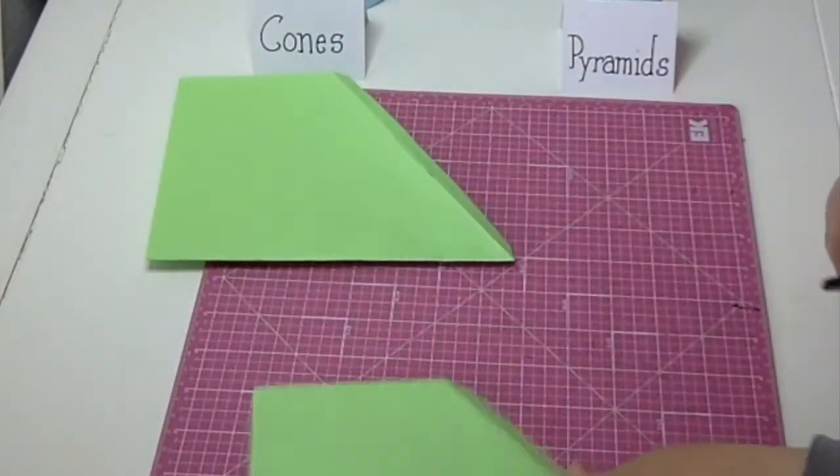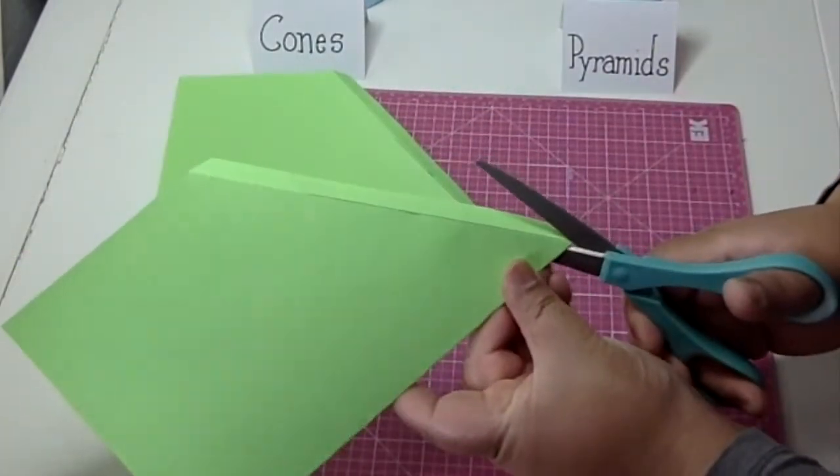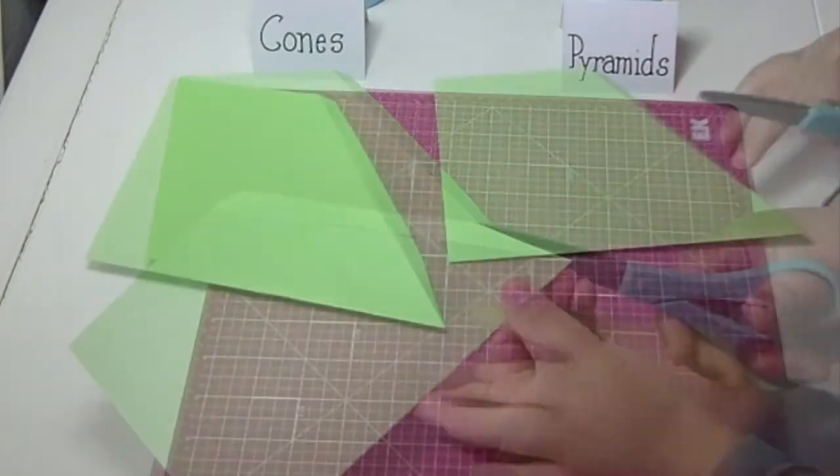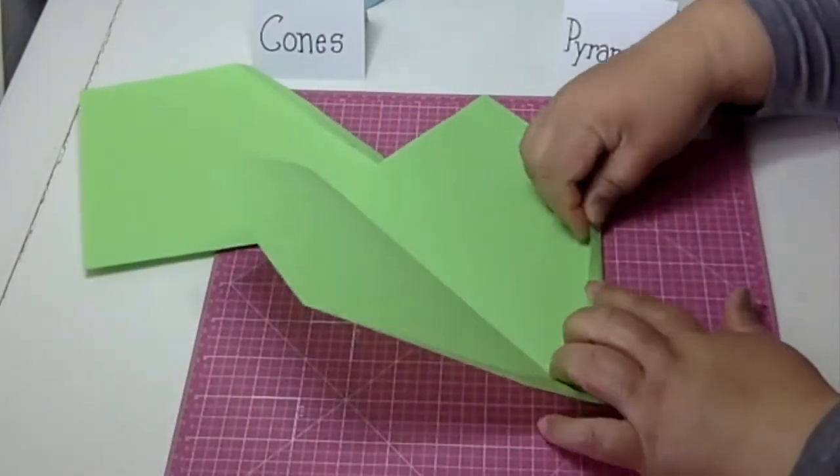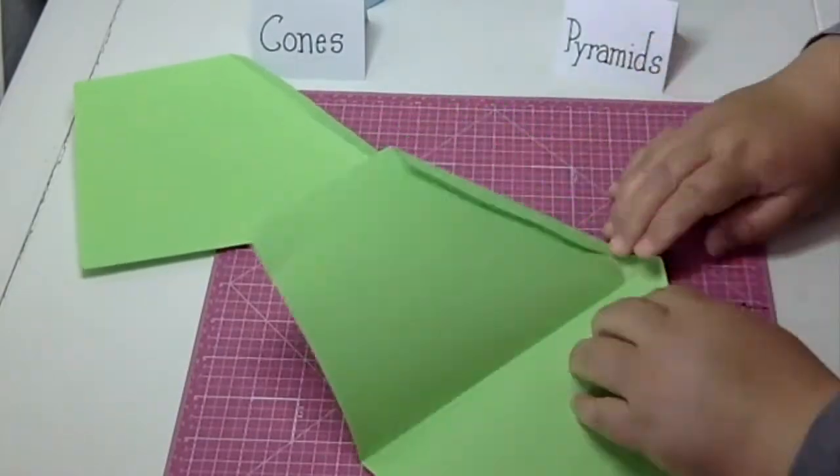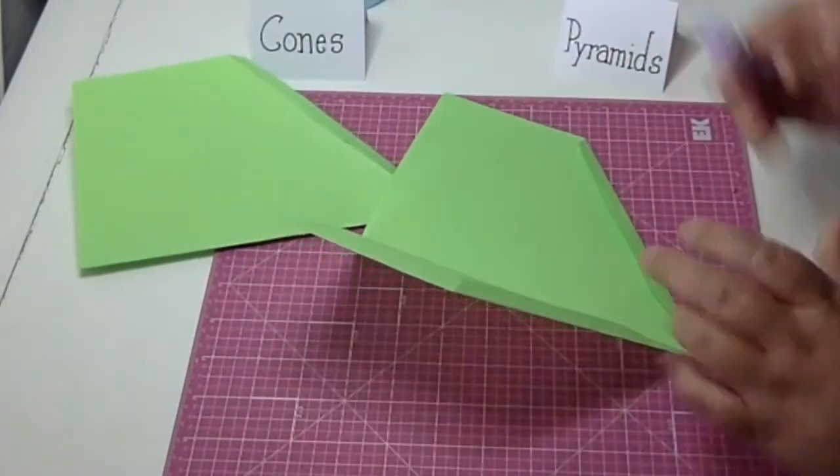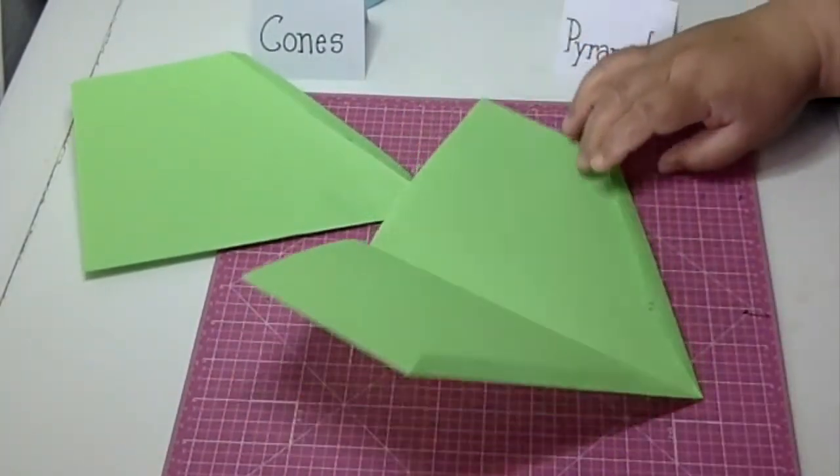And then cut my relief from the point, fold my tabs so they're facing inward, putting glue on it, and meeting it together.